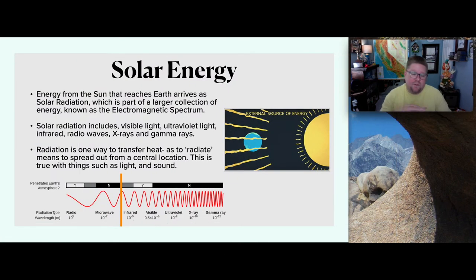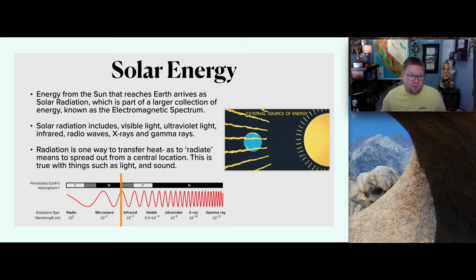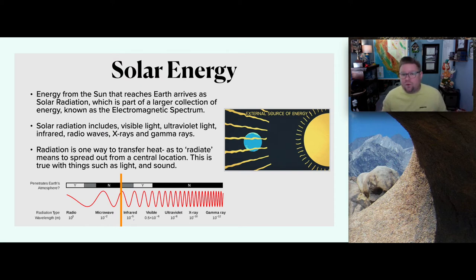So, what is solar energy? Energy from the Sun that reaches the Earth arrives as solar radiation, which is part of a larger collection of energy known as the electromagnetic spectrum. Solar radiation includes visible light, ultraviolet light, infrared, radio waves, X-rays, and gamma rays.